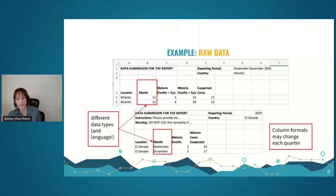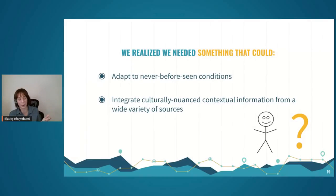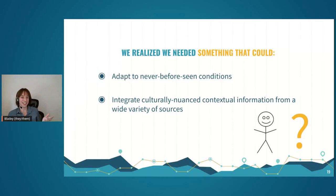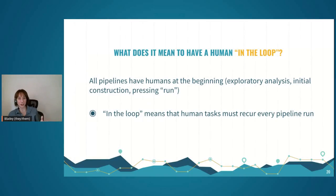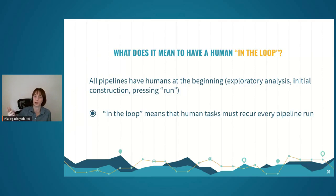With these kinds of challenges, we realized that what this pipeline really needed was something that could adapt to never-before-seen conditions and integrate culturally nuanced contextual information from a wide variety of sources. At that point, what you're really looking at is a human. There are always humans involved in data pipelines — you need someone for exploratory analysis, initial construction, writing code, and pressing go. But when you have a human in the loop, those human-specific tasks are recurring every time or most times the pipeline runs. That's where 'in the loop' comes from.